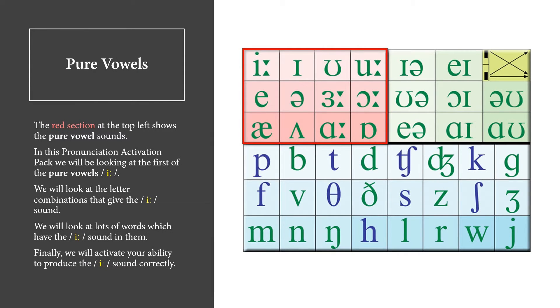Pure Vowels. The red section at the top left shows the pure vowel sounds. In this Pronunciation Activation Pack, we will be looking at the first of the pure vowels, E.